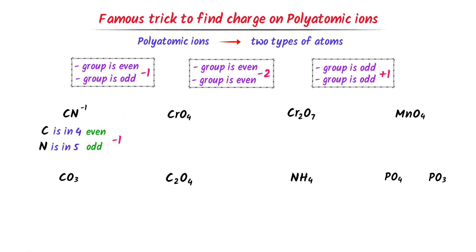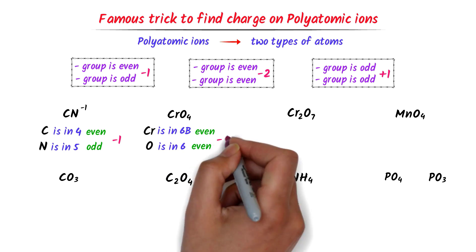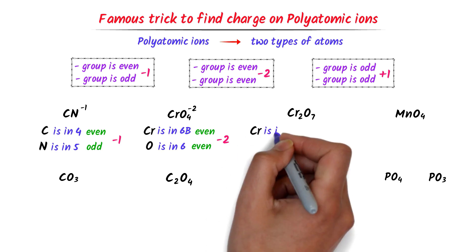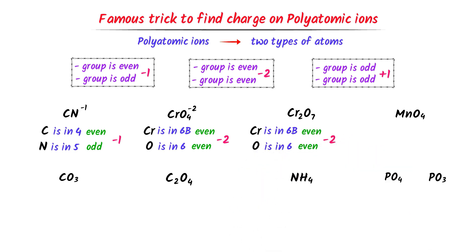In the case of chromate ion, chromium is in the 6B group while oxygen is in the 6A group. Both numbers are even, so the charge must be negative 2. Hence, the charge on chromate ion is negative 2. Similarly, dichromate ion contains the same atoms — chromium and oxygen — so the charge on dichromate ion is also negative 2.